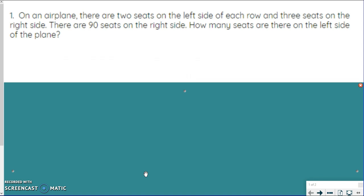We've got: on an airplane, there are two seats on the left side of each row and three seats on the right side. There are 90 seats on the right side. How many seats are there on the left side of the plane? If you've ever seen a plane, sometimes there's three and three, but on smaller planes sometimes there's three on one side and two on the other. That's this kind of plane.